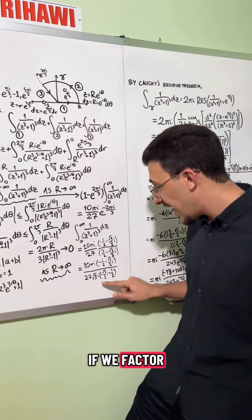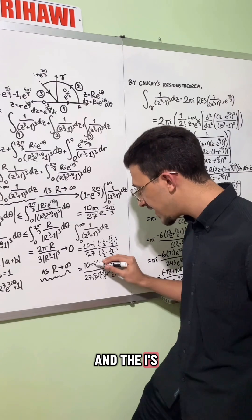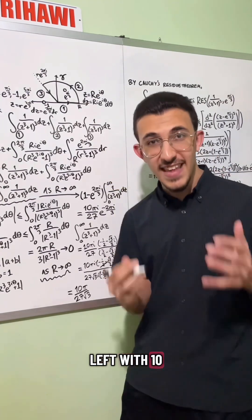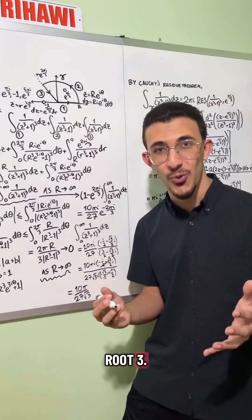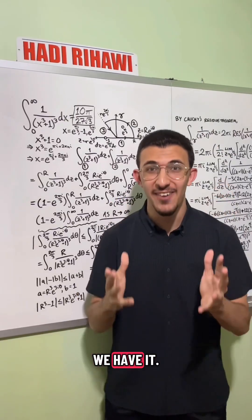Dividing through by one minus e to two pi i over three, we see that from the bottom, we factor an i root three, we actually get that these two parts cancel and the i's cancel. So we're left with 10 pi over 27 root three, which also happens to be 0.67 to two decimal places. And there we have it.